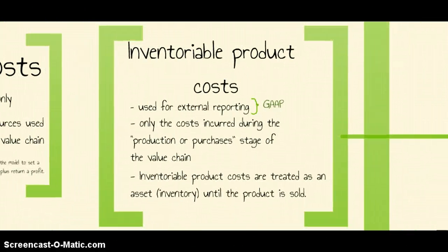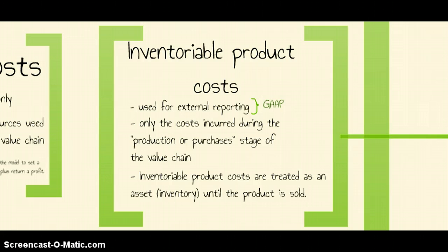The second definition of cost is what we call inventoriable product cost. We only use this for external reporting. GAAP mandates that we use only certain costs to report our inventories. Which costs are these? These are only the costs incurred in producing the item, or costs incurred to purchase the item. Production costs are for a manufacturer; purchasing costs are for a merchandiser. Only the costs incurred during the production or purchase stage of your value chain can be treated as inventory.